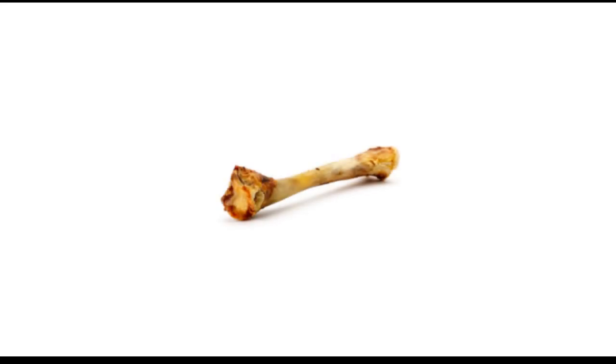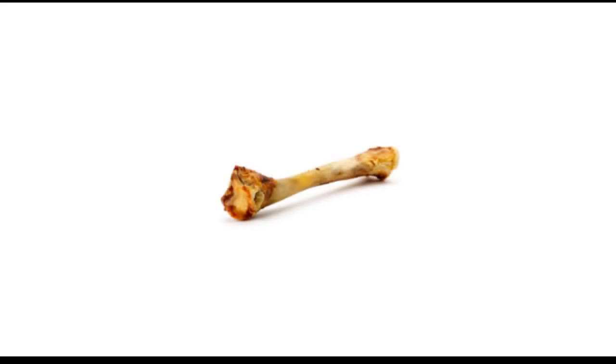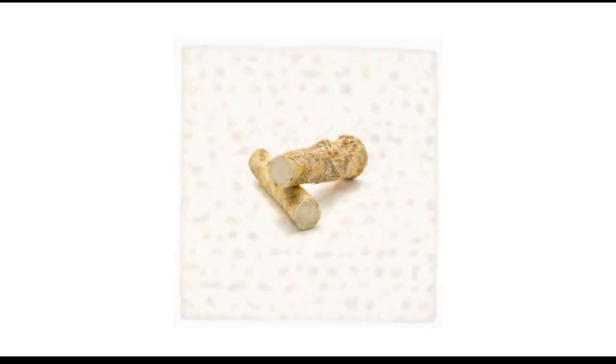Next, we explain the three big symbols of Passover. The shank bone, representing the Passover sacrifice. Matzah, which represents both slavery and freedom. And the maror, the bitter herb, representing the bitterness of our lives in servitude.